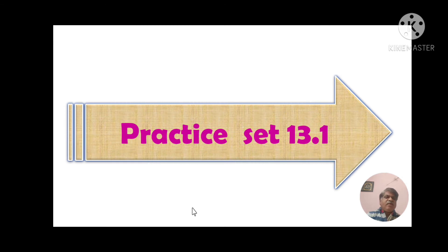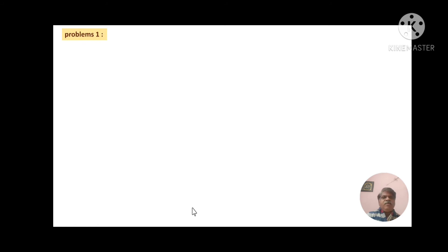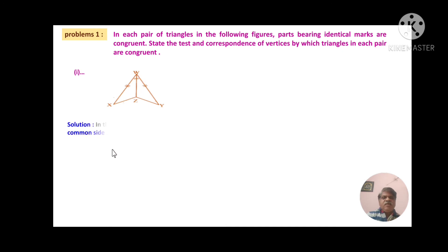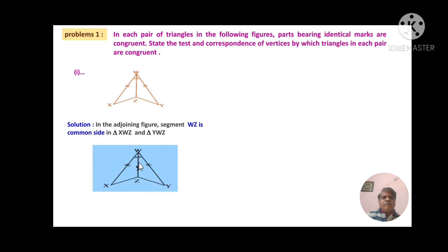Now Practice Set 13.1, problem number one. In each pair of triangles in the following figure, parts bearing identical marks are congruent. State the test and the correspondence by which the triangles in each pair are congruent. For the first pair, segment WZ is common to both triangle XWZ and triangle YWZ. Marking WZ as a common side, the two triangles are congruent by the side-angle-side (SAS) test in the correspondence XWZ to YWZ.